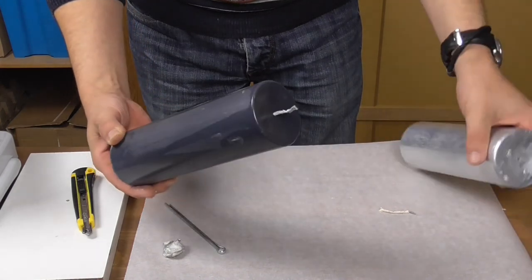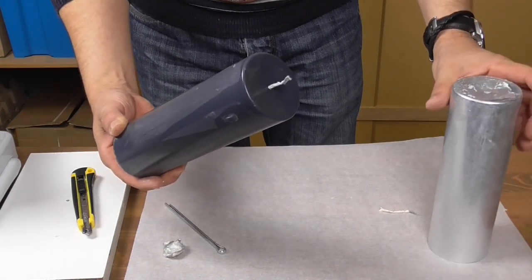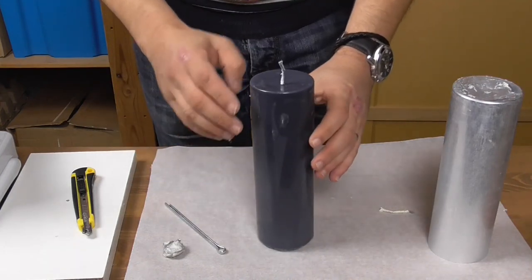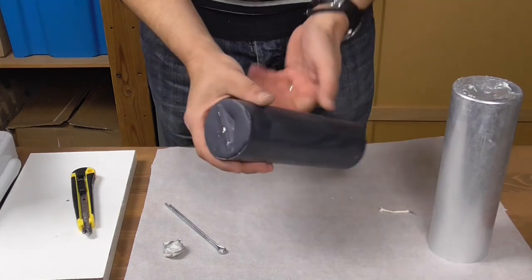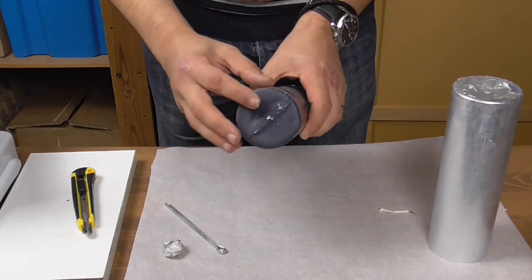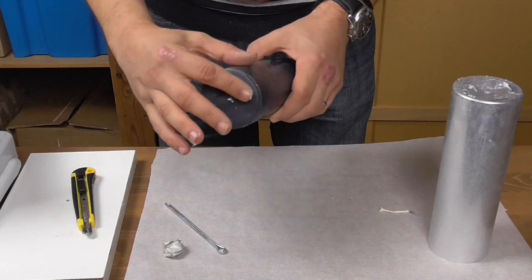There you go. Place it on your work table. You may notice that it is neither stable nor level. This is due to differences in wax level on the base of the candle, but it's an easily solved problem.